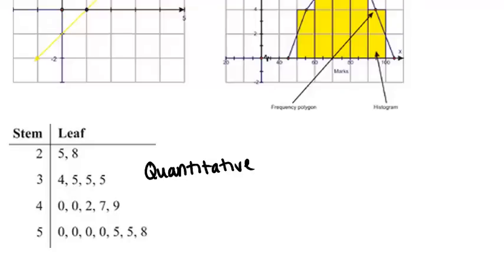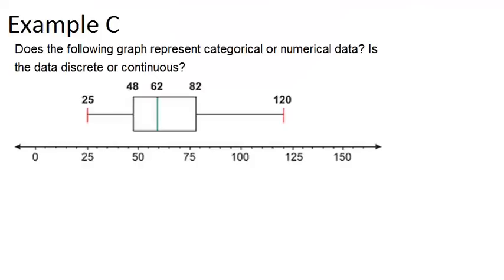All right, let's look at example C. Does the following graph represent categorical or numerical data? Is the data discrete or continuous? So this is a box and whisker plot. And box and whisker plots are always for quantitative data.